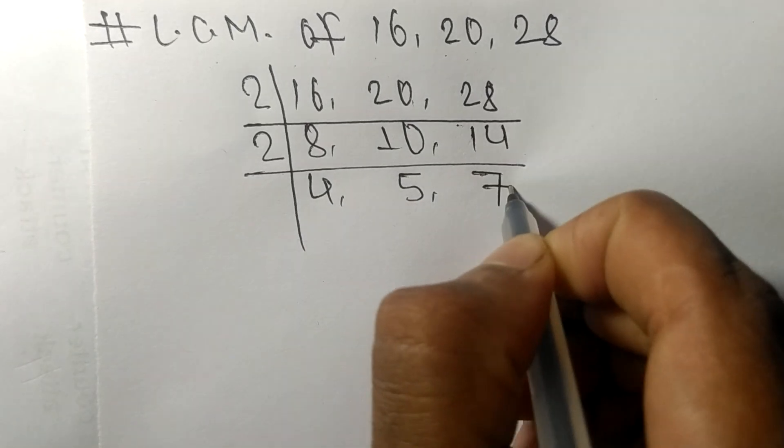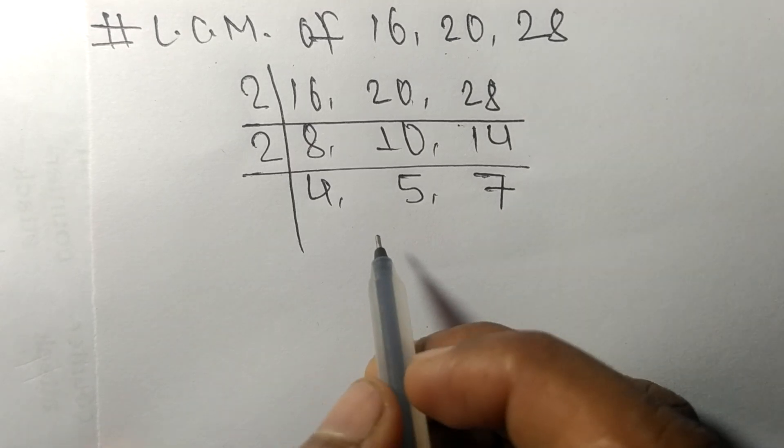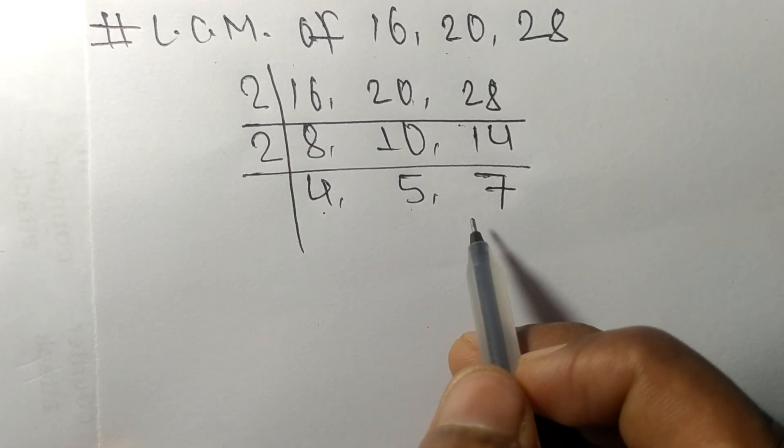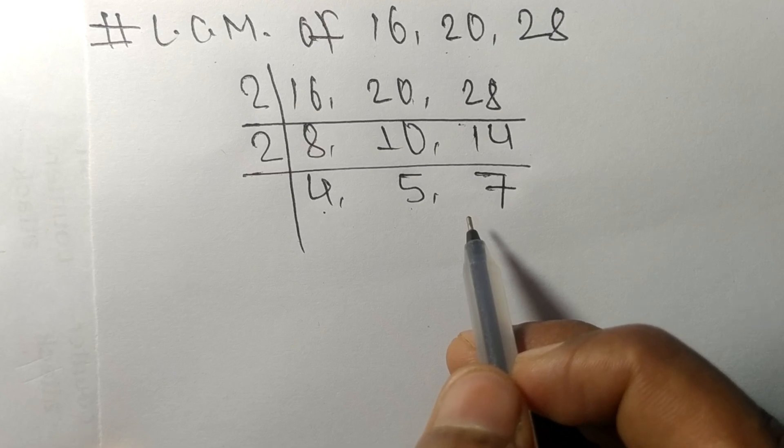Now these numbers 4, 5, and 7 are not exactly divisible by same number.